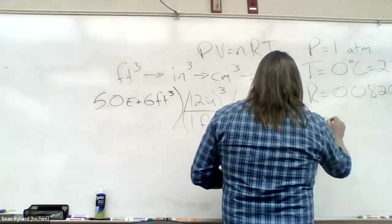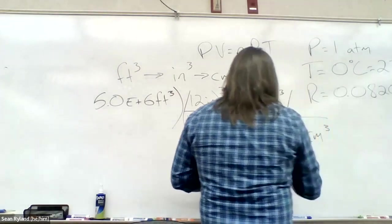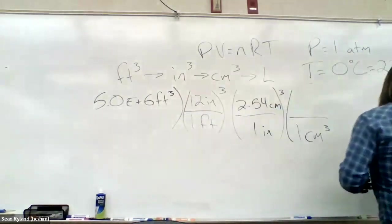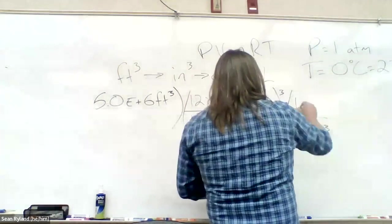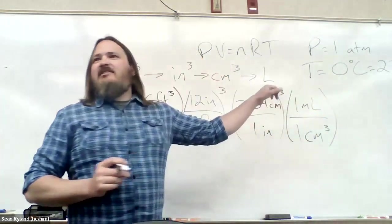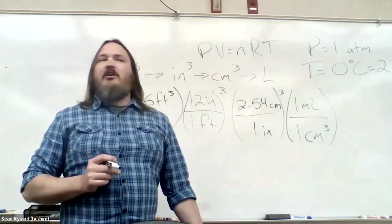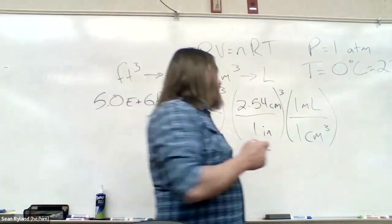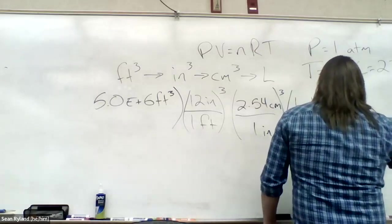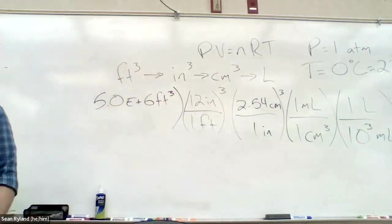And then what's our last step? How do we go from cubic centimeters to liters? One cubic centimeter... We could go... We don't even really need to show that step because on our conversion sheet it has 10 to the 3 cubic centimeters is one liter is on the conversion sheet as well.